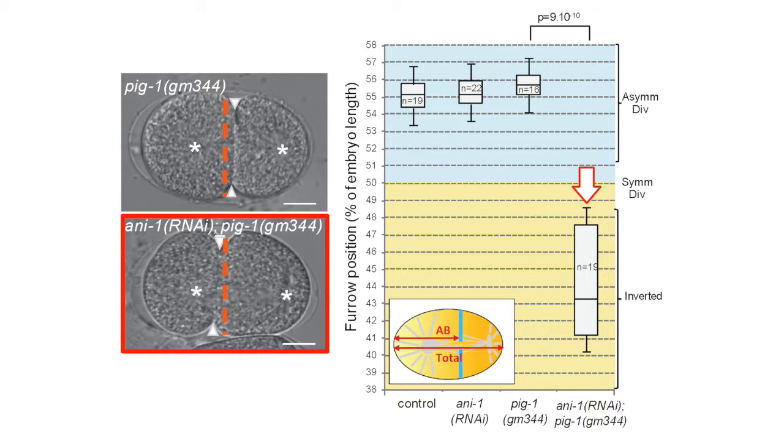Removing both PIG1 and anilin 1 gives a very strong shift of the furrow towards the anterior. The furrow was so strongly shifted in these mutants in fact that the embryos would often fail to segregate their chromosomes correctly.